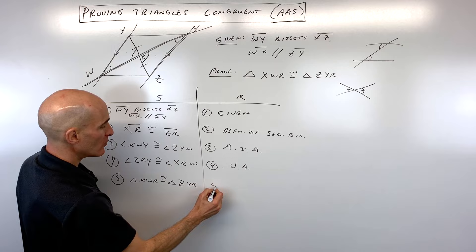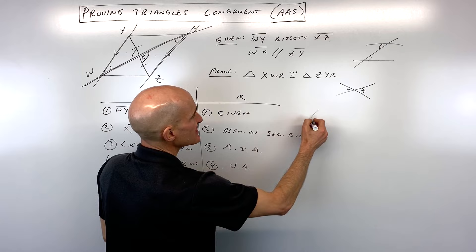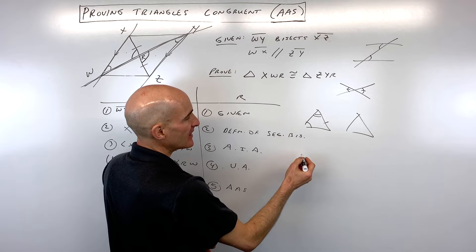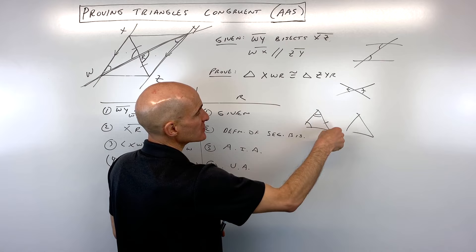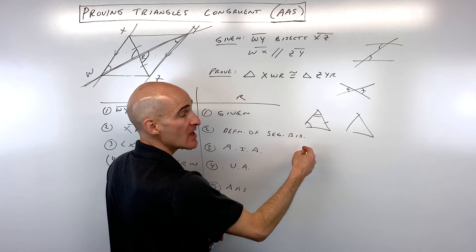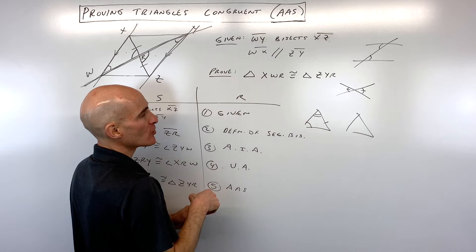Now, one thing I want to just show you over here to the side real quick is say you have two triangles. When you do angle, angle, side, what you want is you want to be able to go around the triangle either clockwise or counterclockwise in order. So it's like angle, the next angle you come to, the next side. You don't want to jump around like angle and like this side, it has to go in that order, angle, angle, side. That's very important.